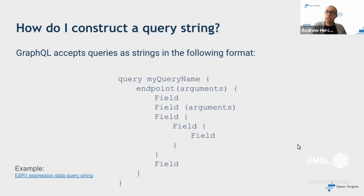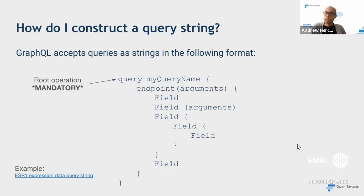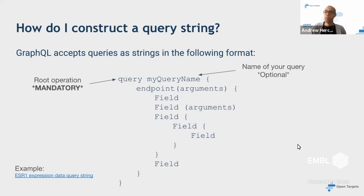The basis of GraphQL is that everything is a POST request based on a query string. The format begins with a root operation — which is mandatory — in this case 'query'. That indicates you'd like to run a query against the API. You can also optionally name the query, for example 'targets associated with psoriasis' or 'diseases associated with BRAF'.